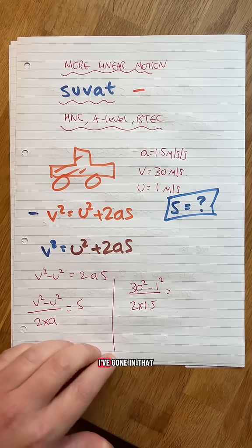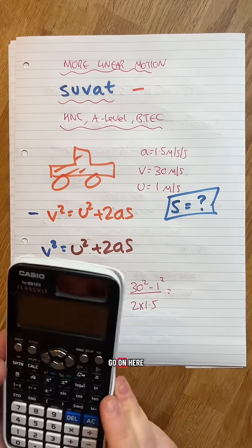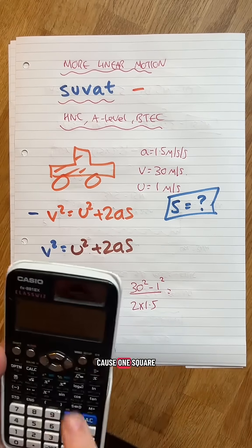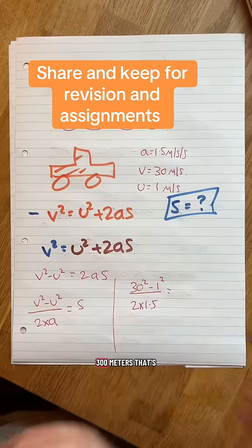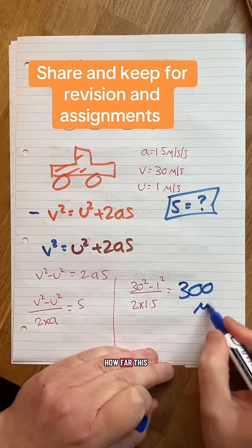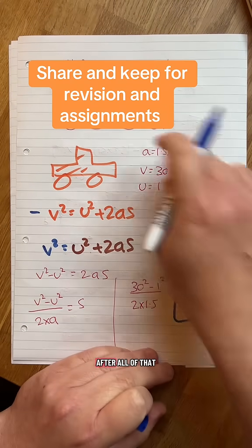This will give me how far I've gone in that. I'm going to go on here. I'm going to do 30 squared, take away 1 because 1 squared is that and then 2 times that will give me that. The answer is 300. 300 meters. That's how far this car will go after all of that.